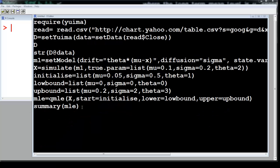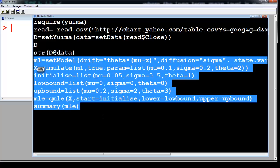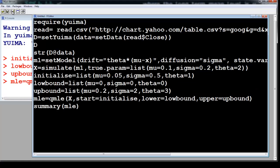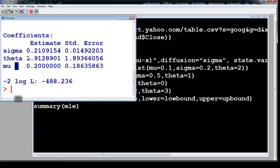So I'm going to run this model in R. So we are just going to run this part. So notice that theta is coming out to be 1.9, we set it at 2, sigma is coming out to be 0.2, and mu is also coming out to be 0.2.